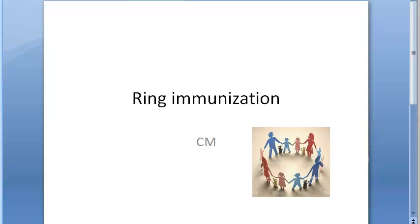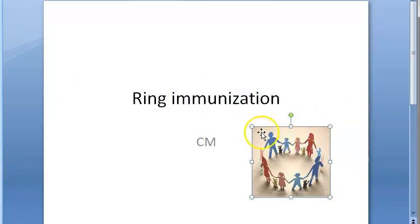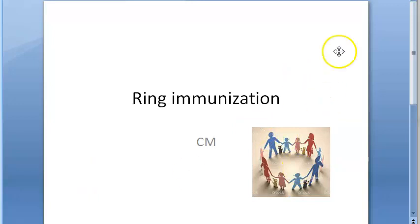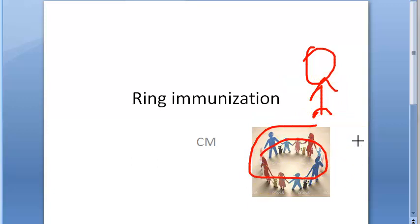In this video, let us look at what ring immunization is. It is basically vaccination — administering a vaccine — but to whom? You are administering it only to the people who are in close contact with an isolated infected patient. Whoever is in close contact with this person will get vaccination. This is ring immunization, or ring vaccination.